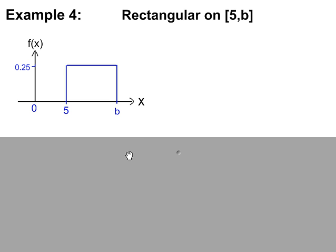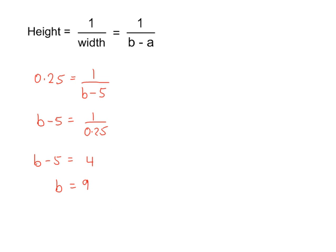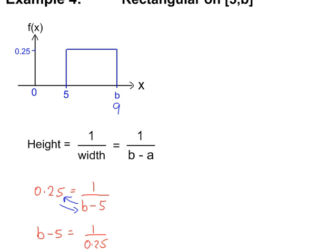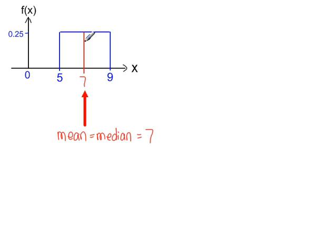Example 4: b is unknown but the height is given. We know that 1 divided by the width gives us the height. Rearranging: 1 divided by 0.25 is 4, then add 5 to each side, so b is 9. The mean is a plus b divided by 2, which is 5 plus 9 divided by 2, equal to 7 — right in the centre between 5 and 9. This is also equal to the median, which splits the probability into two halves of 0.5 each. So 7 is also the median. We can also work out the lower and upper quartiles, where the probability in each region is a quarter.